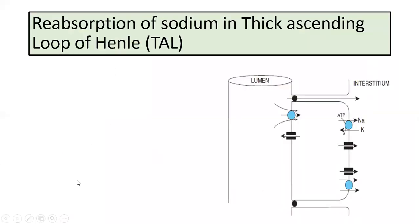The sodium reabsorption in the thick ascending limb of loop of Henle is by a sodium potassium 2 chloride symporter, which is mediated by the active transport mechanism called secondary active transport.